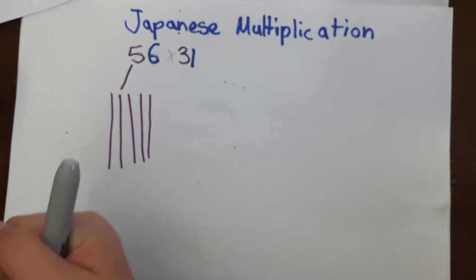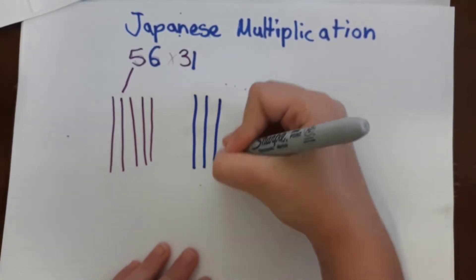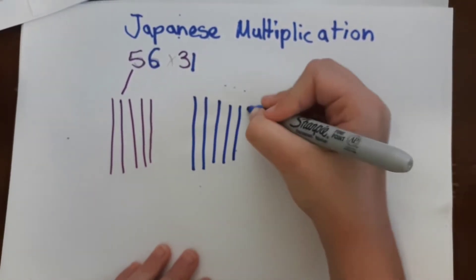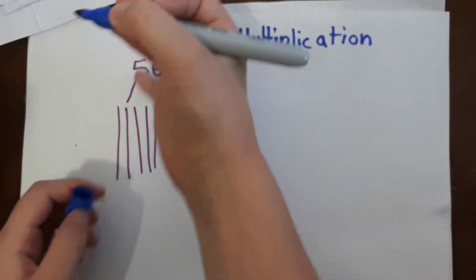And then we do six blue lines. Three, four, five, six. So this is the ones there and that's the tens.